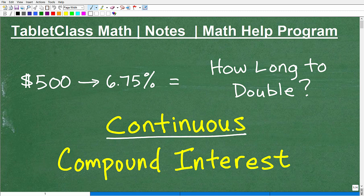Okay, let's talk about continuous compound interest. The problem we're going to be doing in this video is we're going to start off with a principal amount of $500, and it's going to be compounded continuously. Now, that's very important. We'll talk about that more in a second. But it's going to be compounded continuously at 6.75%. And the question is, how long to double? How many years is it going to take to double? In other words, double our investment.